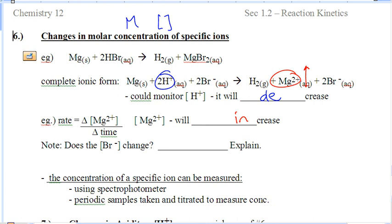So, back to spectators. This is the third time we've seen this. BR is on both sides. You have two BRs on both sides. So, does the amount, does the concentration of BR change? No. It does not change because it is a spectator. It's not part of the reaction.